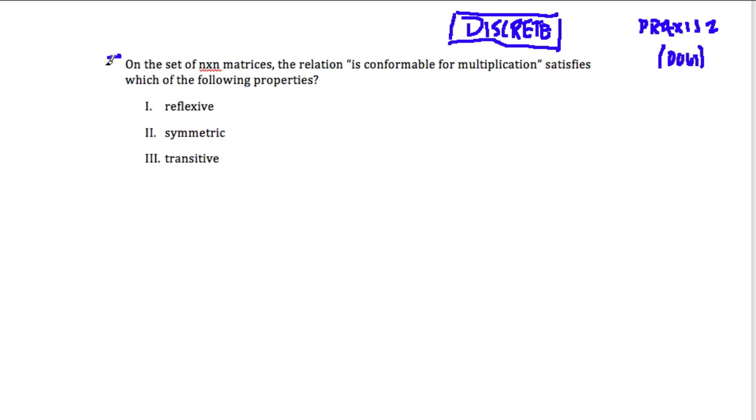And they give us a scenario. The scenario is that on the set of n by n matrices, so we should just set up a simple example. It says the relation is conformable for multiplication satisfies which of the following properties.